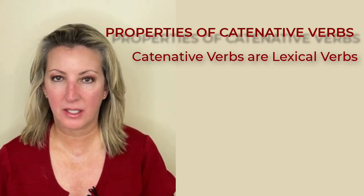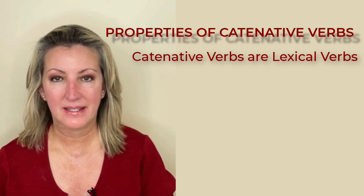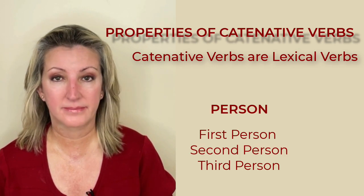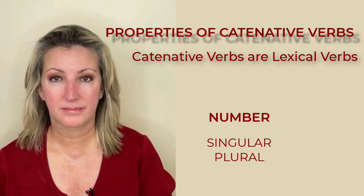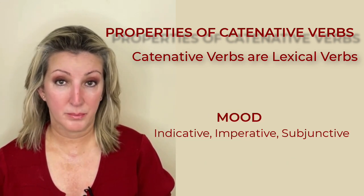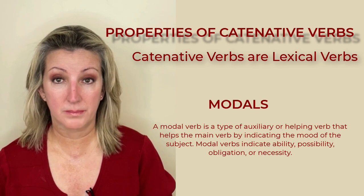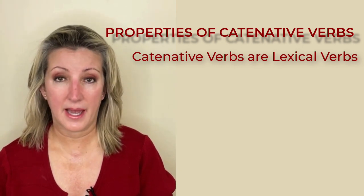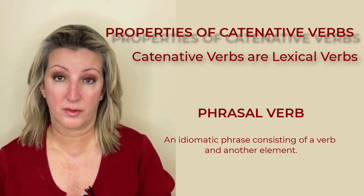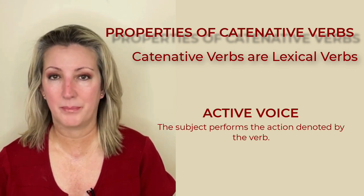Catenative verbs are lexical verbs. This means they share the properties of full or main verbs. And since catenative verbs are lexical, they can be conjugated to show person, pattern, number, tense, aspect, and mood. Catenative verbs can also be used with modals. And a catenative verb can be a phrasal verb or can link to a phrasal verb. The catenative structure can be found in both the active and passive voice.